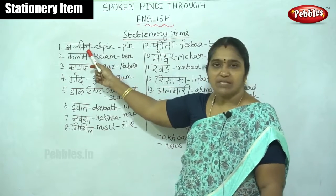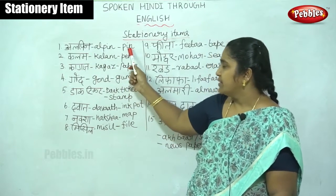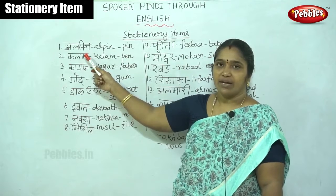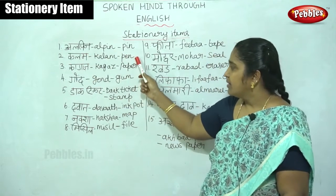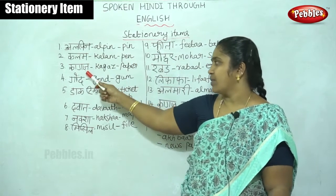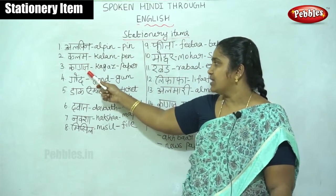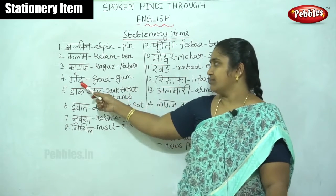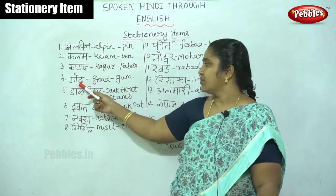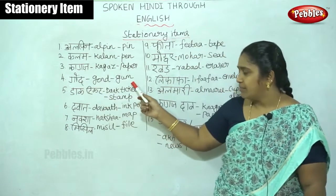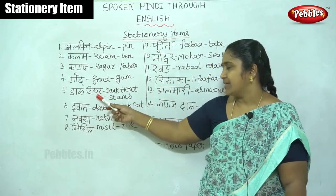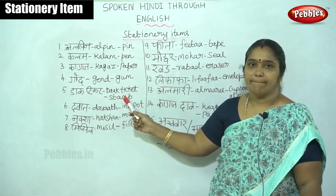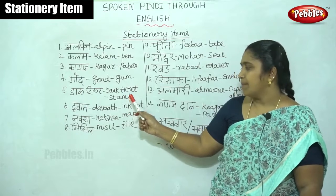Once again: Alpin is called pin. Then kalam — kalam is pen. Then kahas — kahas is paper. Then gond — gond is gum. Dog ticket — dog ticket is stamp.